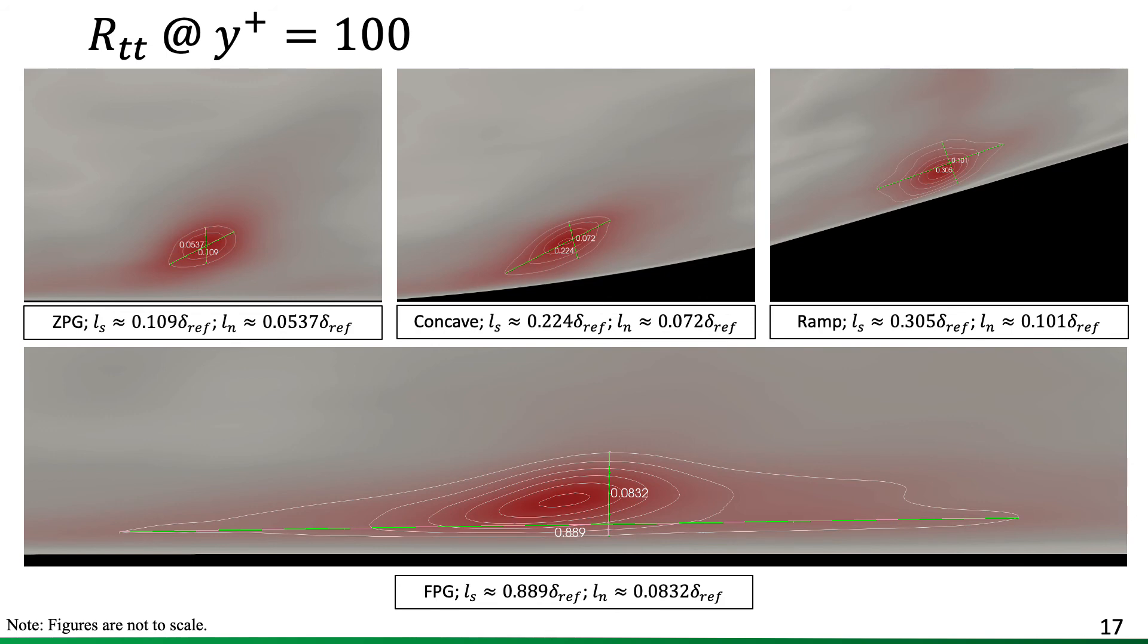And now moving to the outer region, mostly structures tend to be similar. But again, there's a doubling in the length of the structure in the concave region, tripling with respect to the incoming region in the ramp. And the longer structures are seen in the FPG region.